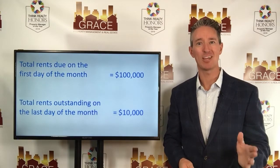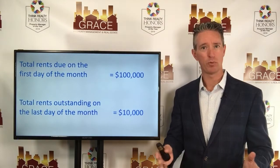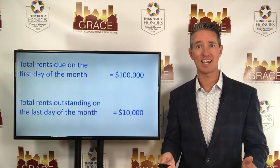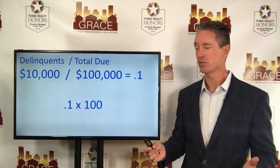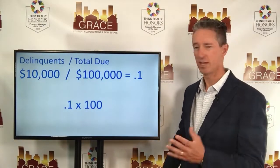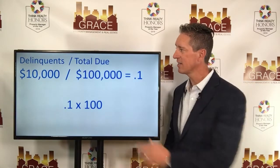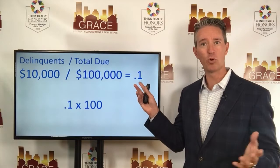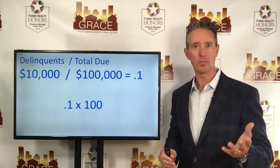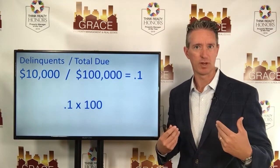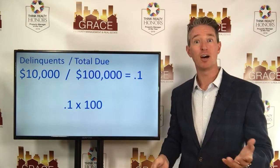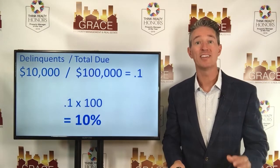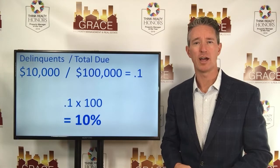Now you get to day 30 of the month and you pull up a report to see how much is still outstanding, and you're showing that $10,000 is still outstanding on the last day of the month. Here's how we make the calculation: we take our total delinquent rents — $10,000 — divide that by the total rents that were due on the first day of the month — $100,000 — and it gives us 0.1. We take that 0.1, multiply it by 100 to convert it to a percentage, and we get 10%. So in this scenario, at the end of the month, you have 10% of rents still outstanding.